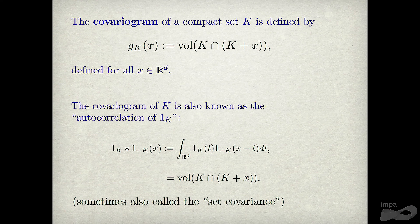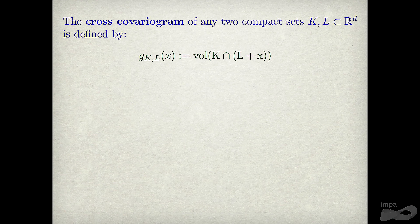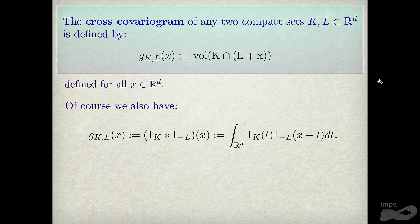So far so good. The same construction works if you replace K and K by any two compact subsets K and L — you get the convolution of the two functions. One idea is to apply Poisson summation to this convolution and see what happens. You could also use Plancherel.